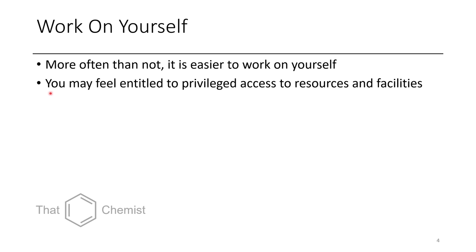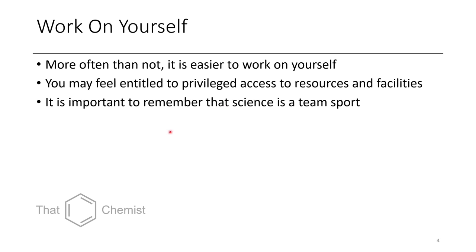One thing that's really common is feeling entitled to privileged access — thinking you're a better researcher so you should have first access to solvents or reagents, or thinking that as a postdoc or PhD student you have privilege over a master's student or undergrad. While that might be the case, it's not a very nice way to live. You might see yourself as more important, but oftentimes it's better for everyone if you just sacrifice. It's important to remember that science is a team sport, and you wouldn't be where you are if everyone was selfish.